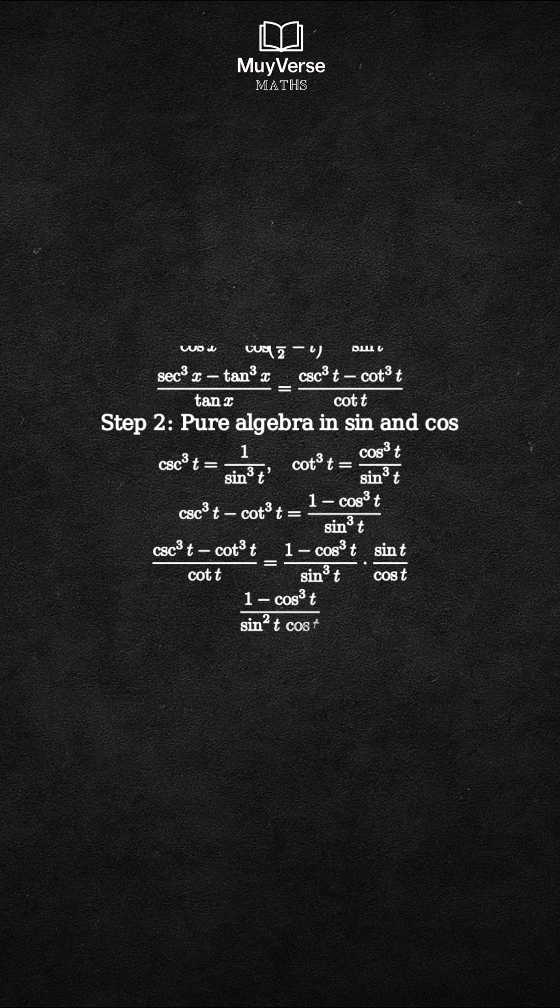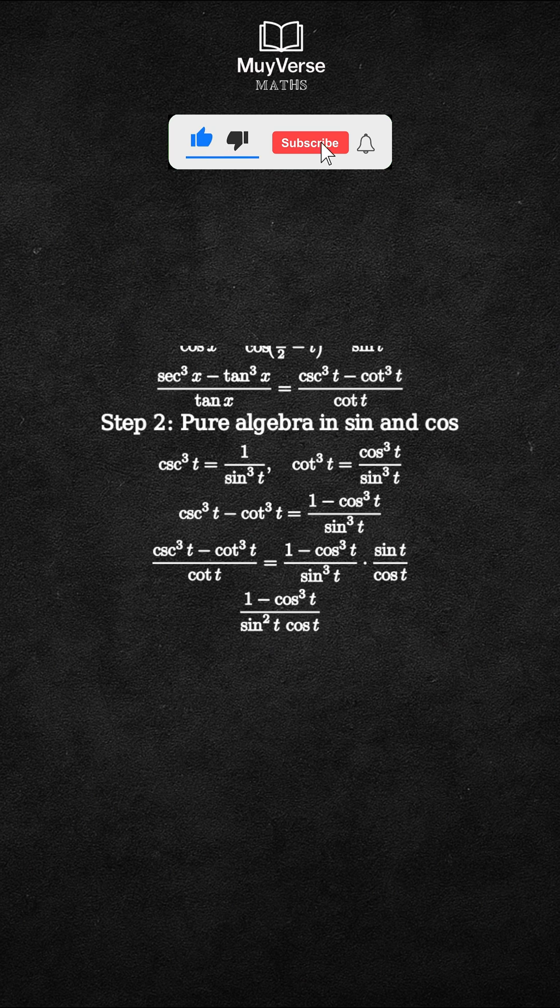We obtain the single fraction (1 - cos³t) over (sin²t times cos t).